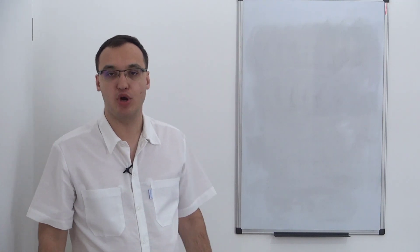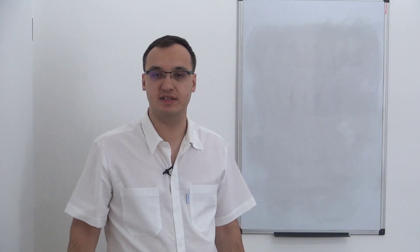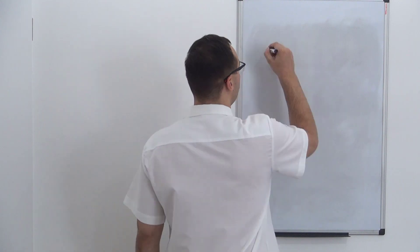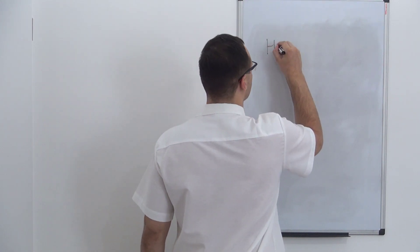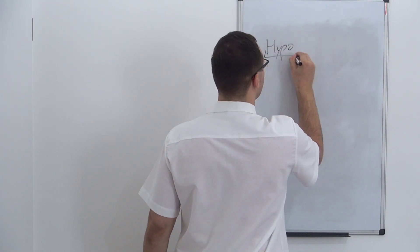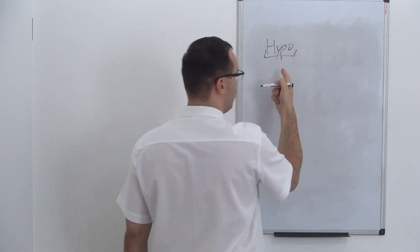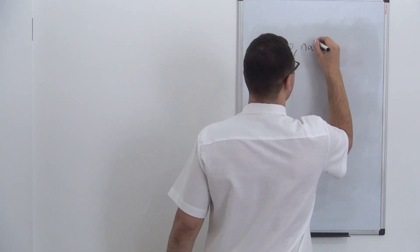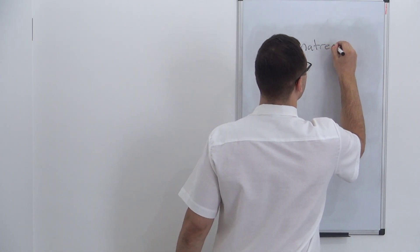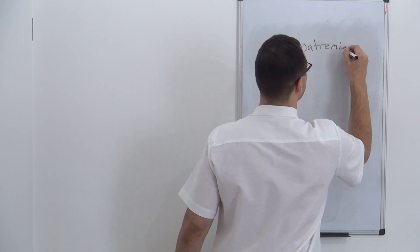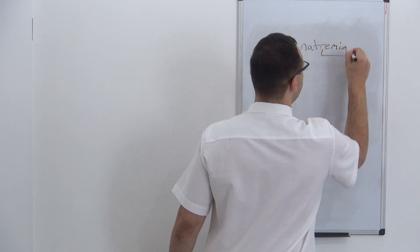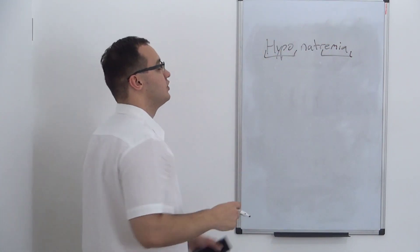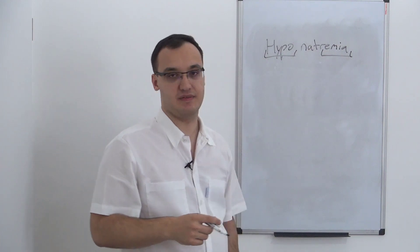Hello, today we'll discuss hyponatremia — that is when we have a lower amount of sodium in the blood. 'Hypo' stands for low, 'natremia' comes from 'aemia' meaning blood and 'natrium' meaning sodium. So hyponatremia means we have a low amount of sodium in the blood.